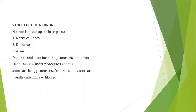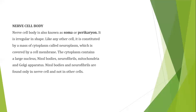The neuron has three main parts: cell body, dendrites, and axon. Dendrites and axons are processes of the neuron — dendrites are short, axons are long, and both are called nerve fibers. The nerve cell body, also known as soma or perikaryon, is irregular in shape, surrounded by cytoplasm called neuroplasm, covered by a cell membrane, and contains a nucleus. Uniquely, it contains Nissl bodies, neurofibrils, mitochondria, and Golgi apparatus.